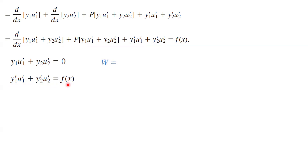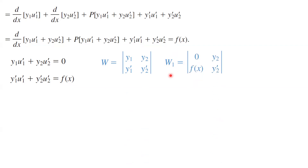We can find the Wronskian. The Wronskian, as you remember, is the determinant of y1, y1 prime, y2, y2 prime. And we're going to define two more sub-Wronskians: W1 as the determinant of 0, f of x, y2, y2 prime; and another sub-Wronskian W2, which is the determinant of y1, y1 prime, 0, and f of x.